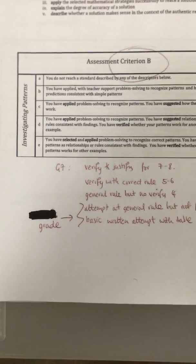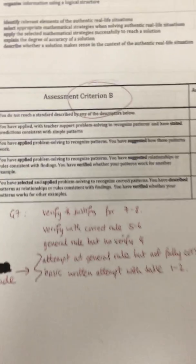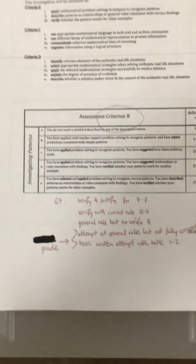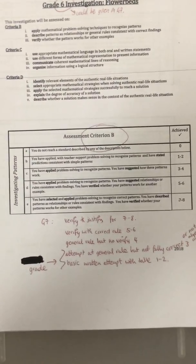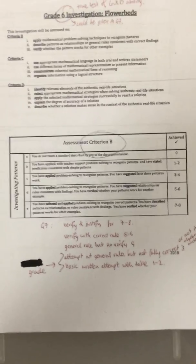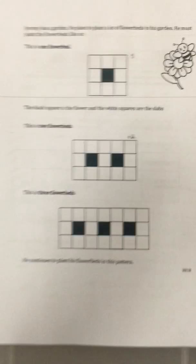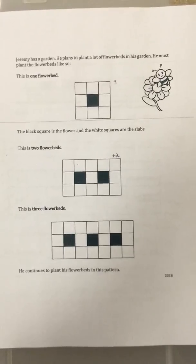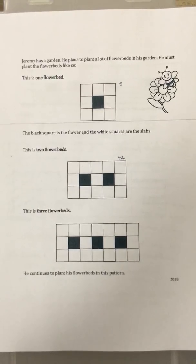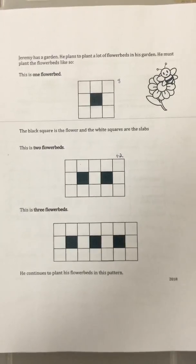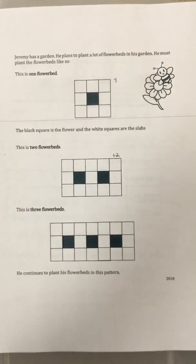For grade 7 and 8, they have to justify, and I talk about that in another criteria B example. So this is for grade 6. The problem: Jeremy has a garden and plans to plant a lot of flower beds. He must plant the flower beds in a specific pattern.